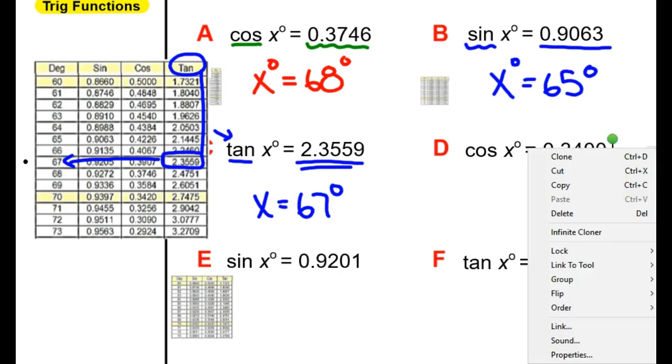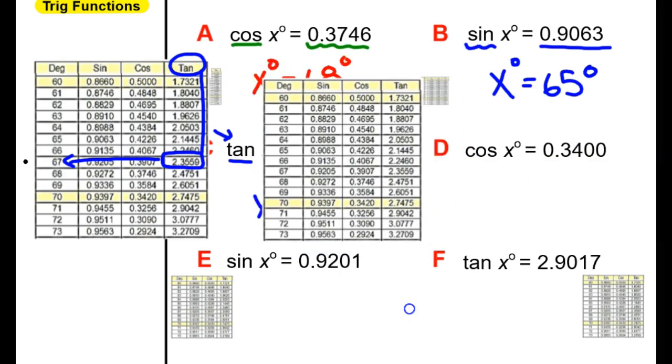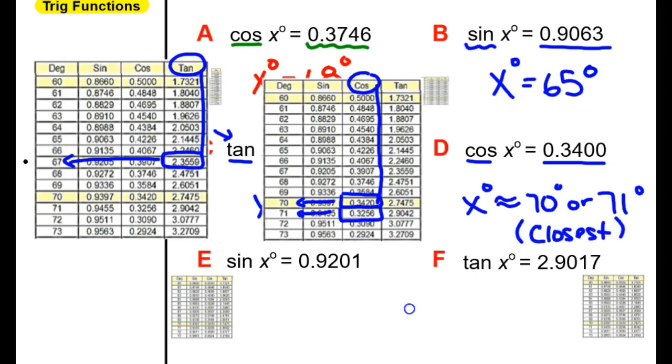What happens now if I try with this one? So for D, now I'm going to read in my cosine column for 0.3400. If you look in the cosine column and you read down, you notice that we have 0.3420 and we have 0.3256. Neither one of those is exactly 0.3400. So now we need to pick the closest one between 70 and 71 degrees. That means this angle right here is approximately 70 or 71 degrees. When we're using the table, I would take either answer. We just choose the one that is closest to 0.3400. In this case, we would take either answer.